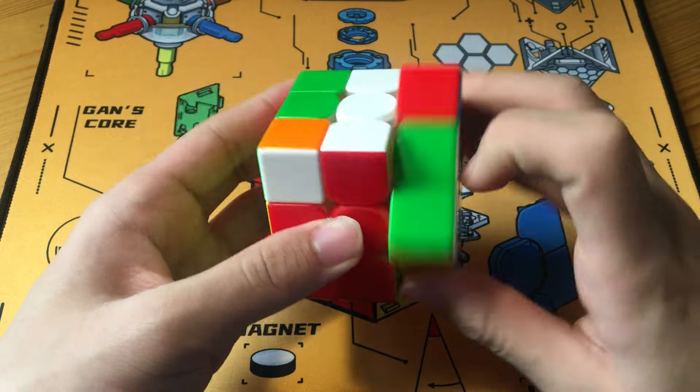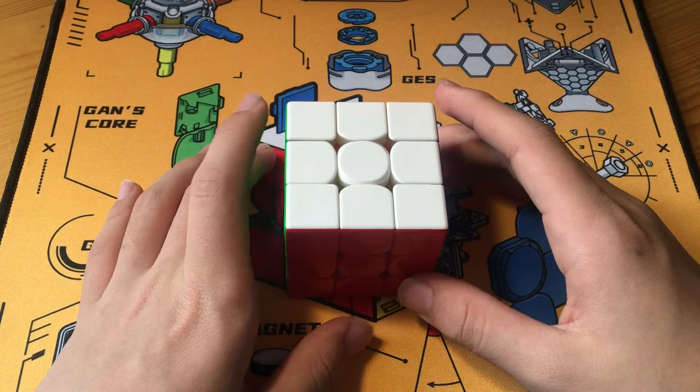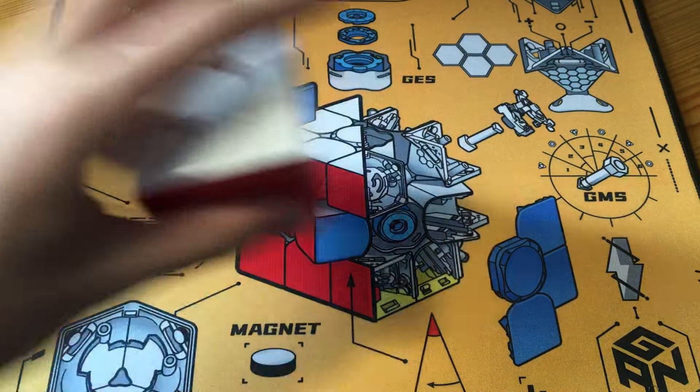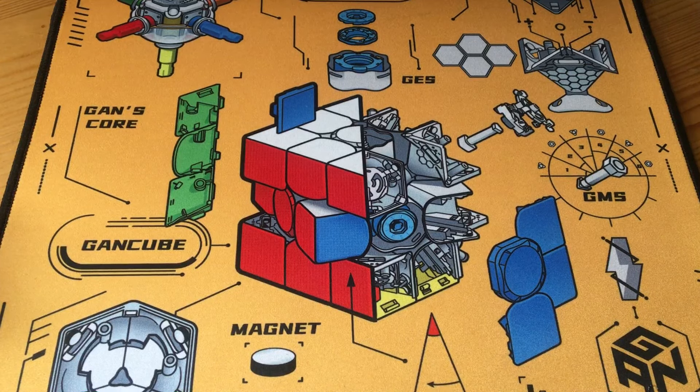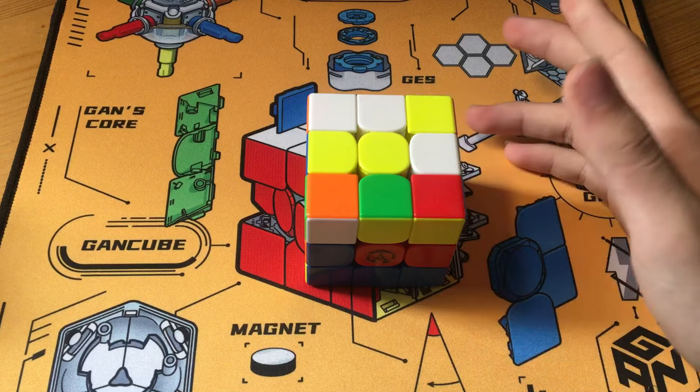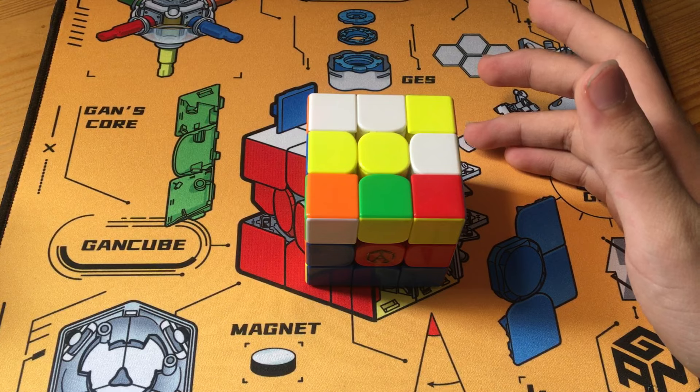And a very lucky OLL, F double-sexy, F prime into PLL skip. A brilliant 2.96. And now this average is already going great, and Kyle finishes up this average with two, again, brilliant low five singles to get a 3.96 average of five.